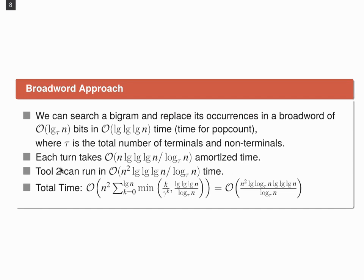And we can implement tool 2 alternatively, by a naive approach using n squared time, times the broadword techniques. So, we have now two different implementations of tool 2, and this gives us this minimum function, and doing the math gives us this time bound.